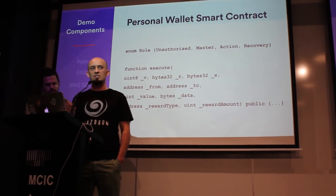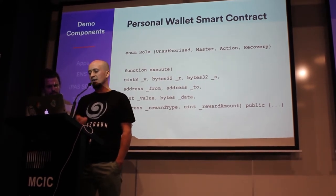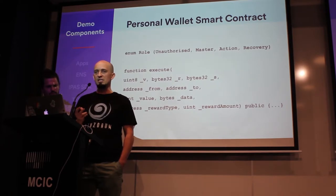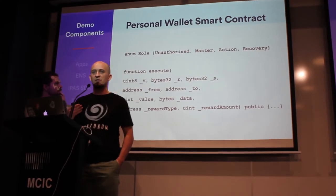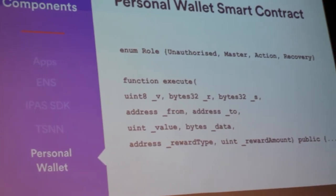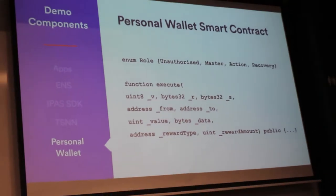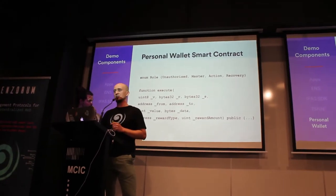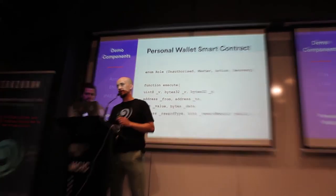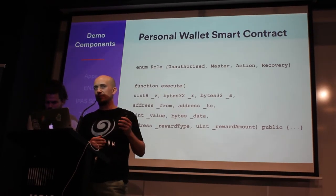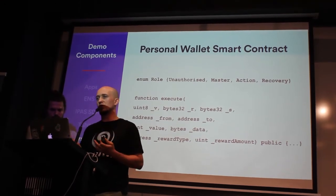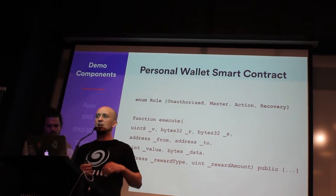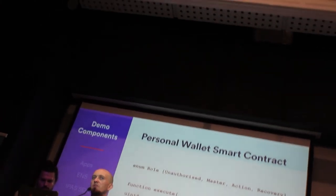And the last component — the smart contract — is deployed on the blockchain. It has two main features. One is that it defines different roles. There is a master, action, and recovery role. Those will get assigned to different wallet addresses. So you have this mobile application which will have an account — this could be your action account, so you can use it only for small spendings. Or you can have this action account in some game or some DApp and give it a small allowance to operate on your funds. And then you will have this secure master account which has rights to move all of your funds.